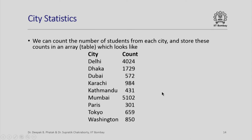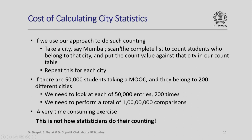Observe that this city statistics that I am counting has an uncanny resemblance to the histogram that I was counting. Now, if we use our approach to do such counting — which we used in histogram counting — we take a city, scan the complete list, put the count value against that city in our count table, and repeat this for each city. If there are 50,000 students taking a MOOC course and they belong to 200 different cities, we need to look at each of the 50,000 entries 200 times — that is one crore, or 10,000,000 comparisons — clearly a very time-consuming exercise. We will consider a simpler way of doing this computation.